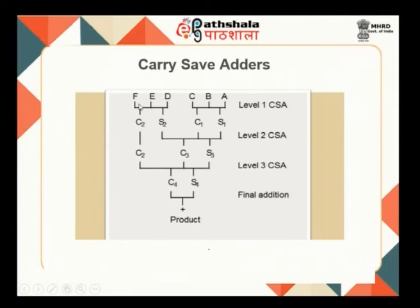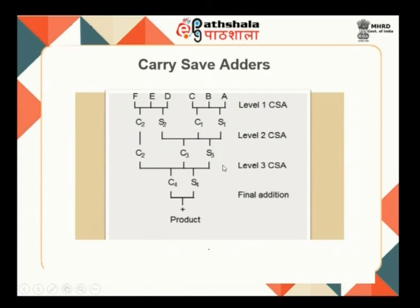Using carry save addition, you can combine 3 data inputs together. If you have 6 data bits to add, 3 data bits are added, producing a sum bit and an appropriately shifted carry vector. Similarly, the other 3 added together produce another sum vector and carry vector, reducing 6 vectors to 4. At the next level, 3 are combined again, producing a sum and carry vector, and this reduction continues until only 2 vectors remain for a final addition.